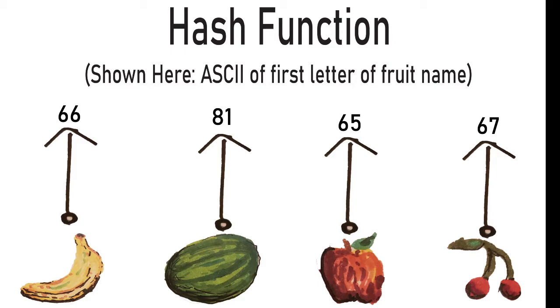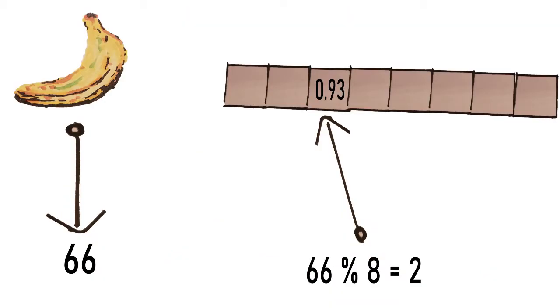For example, we might make our hash function by taking the ASCII value of the first letter of the fruit. This would hash banana to 66, but if our array has length 8, we'd get an index of 2. Of course, that would be a pretty bad hash function since it wouldn't be evenly distributed, so in reality you would do some more computation.